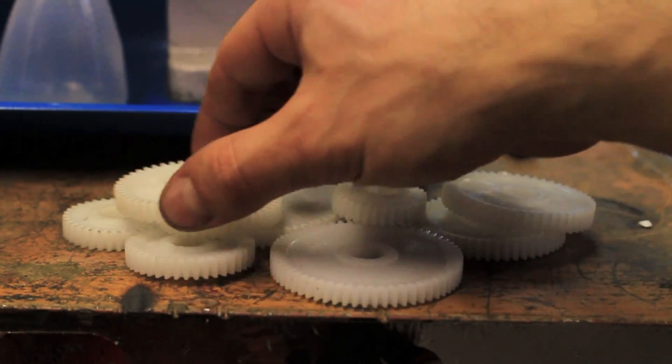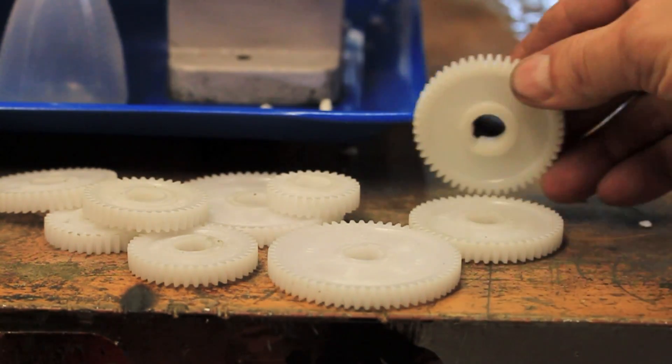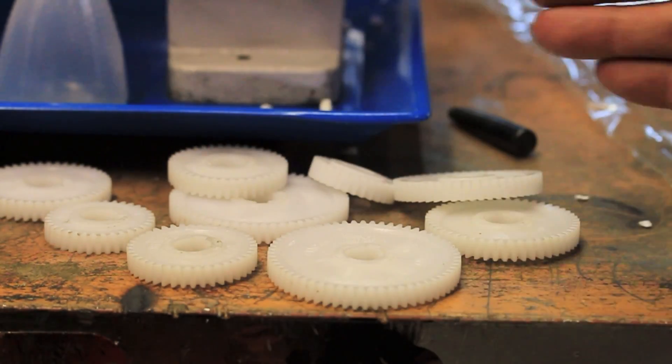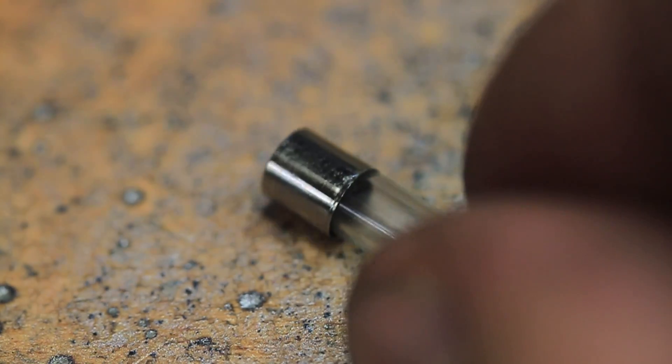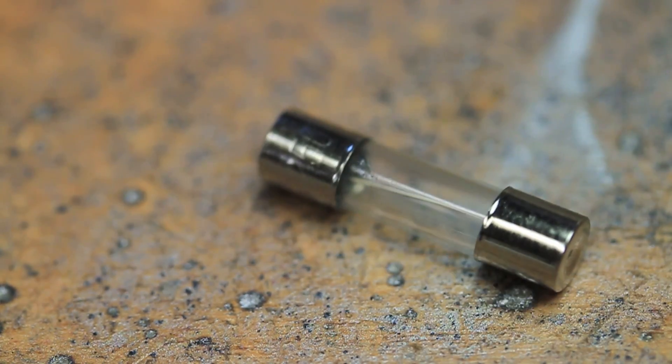This is the set of gears for changing the speeds and ratios between the chuck and the power feed. An extra fuse, nothing special.